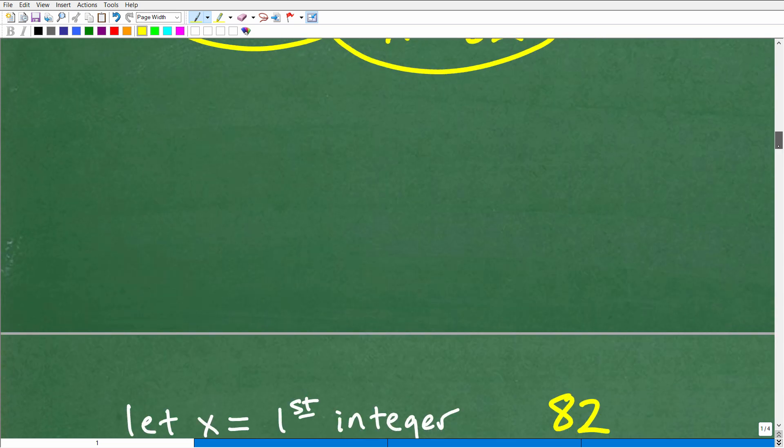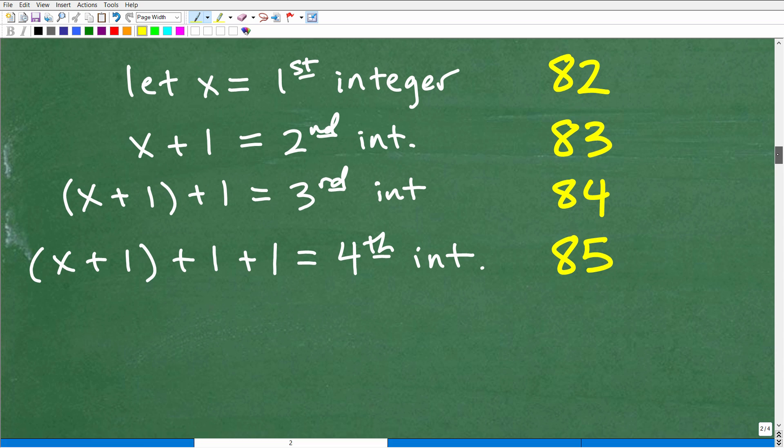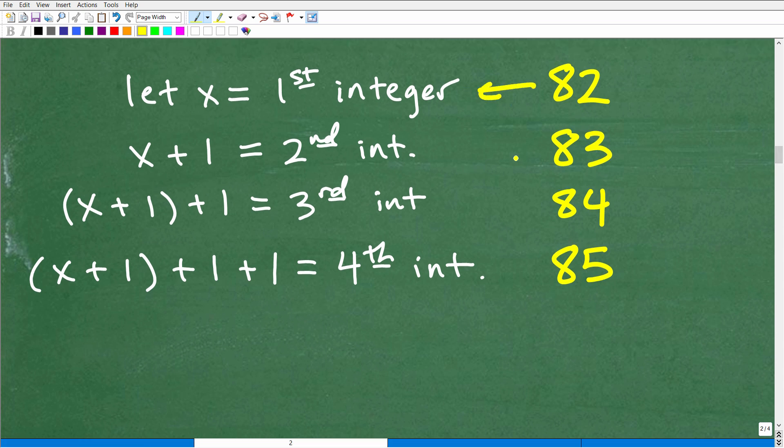But if you were kind of confused about that, you could just go back to our little model here. x was equal to 82, x plus 1 of course 83, x plus 2 from our 82 is 84, and then of course 85 would be our last consecutive integer.